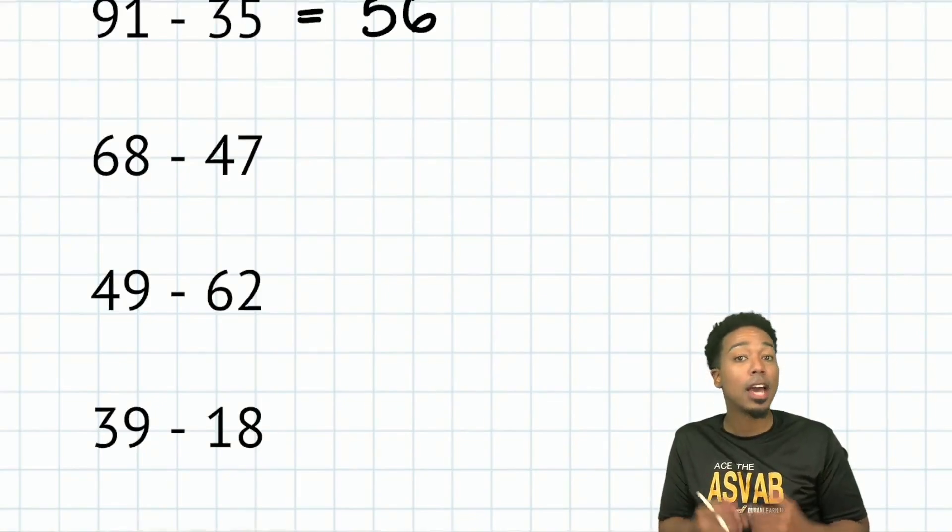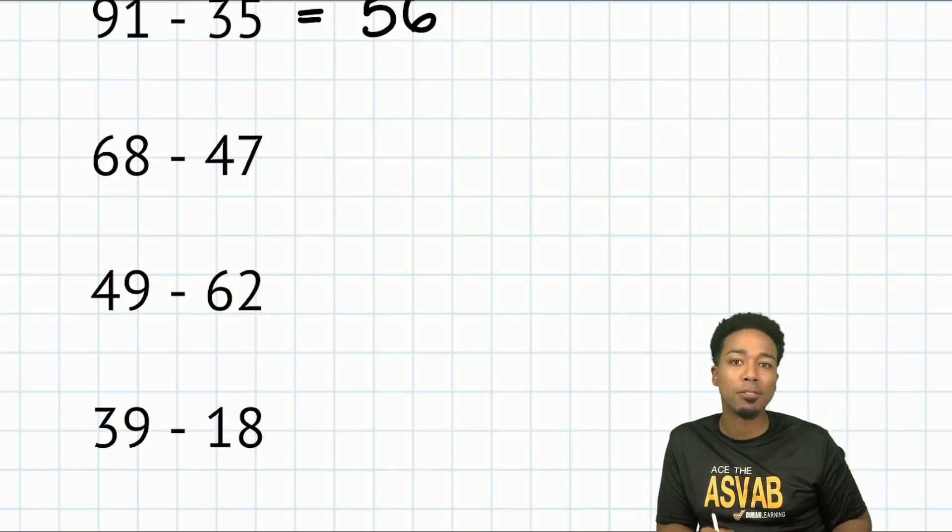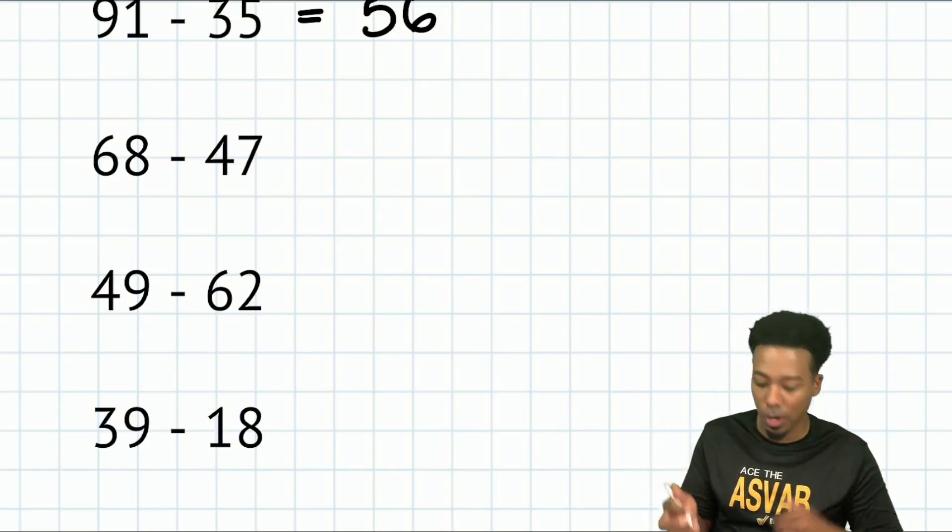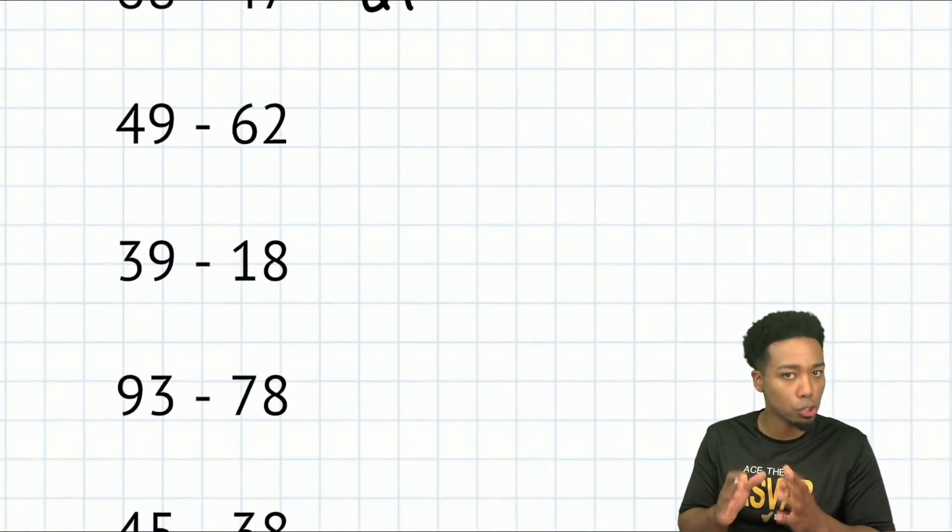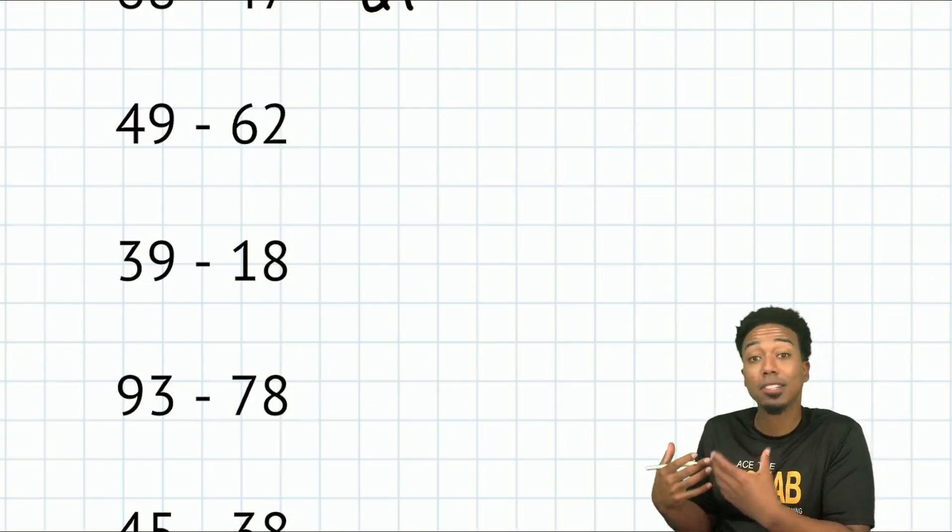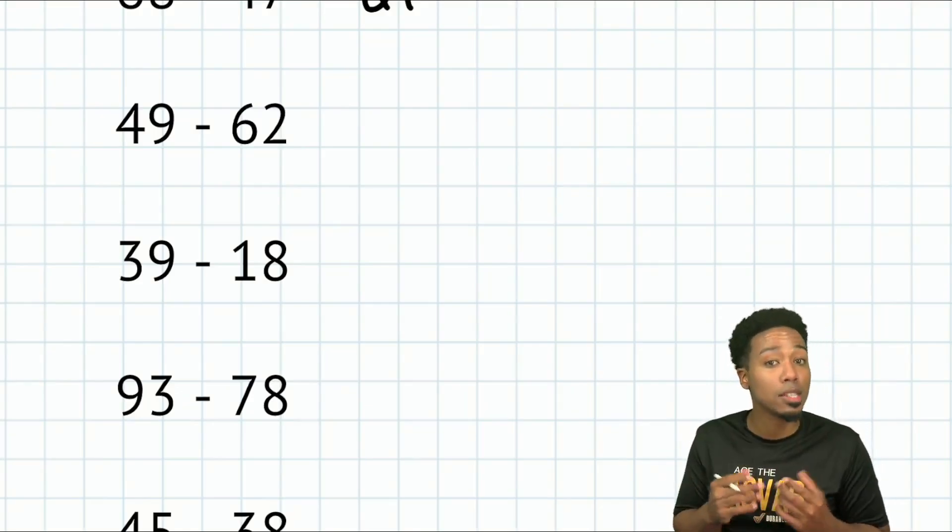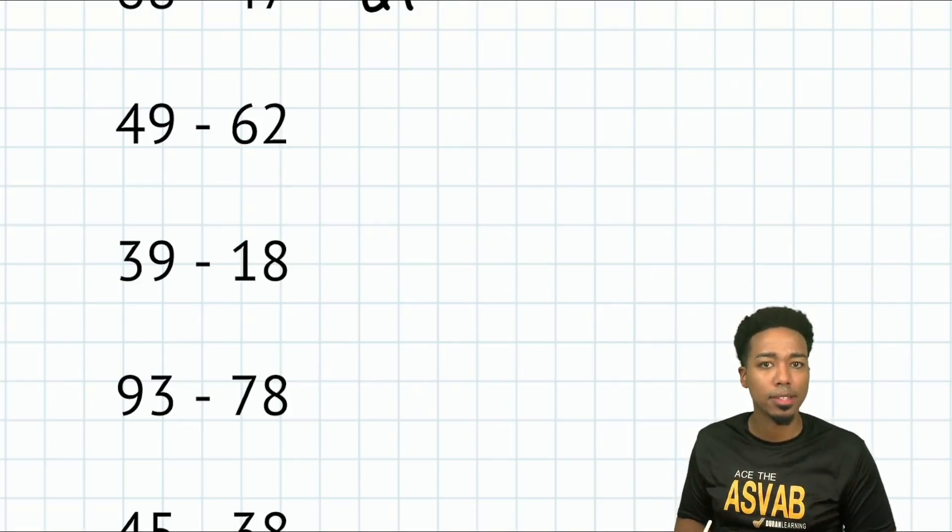Next up, 68 minus 47. How can we do this? Subtract 50, add three back. So that's going to be 68 minus 50 is 18. Add three, 21. I'm telling you, it is and it can be that straightforward. I know I'm going fast, but you can absolutely get to this speed with a little bit of practice.